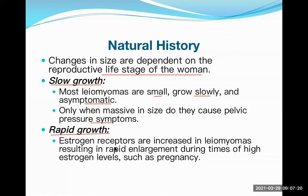Regarding rapid growth: estrogen receptors are increased in leiomyoma, resulting in rapid enlargement during times of high estrogen levels, such as in pregnancy. If the lady is taking oral contraceptive pills, the fibroid can also grow faster. It all depends on the estrogen receptors and estrogen levels.